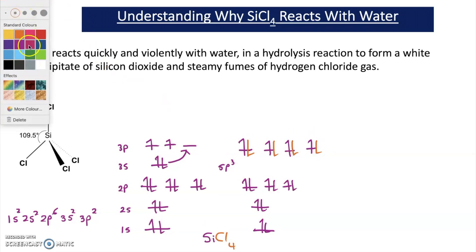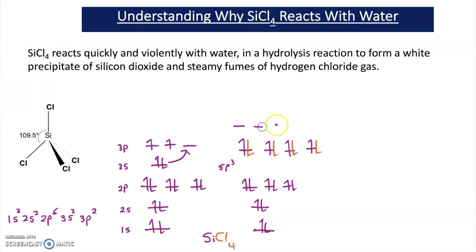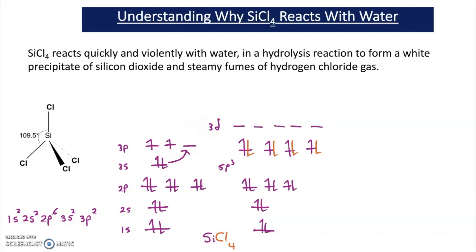The reason that silicon tetrachloride is able to react with water is because there are 5 vacant d-orbitals nearby in terms of energy that water can form bonds to. When we study the mechanism of this reaction, a key intermediate involves water forming coordinate bonds to the vacant d-orbitals on the silicon tetrachloride. Lone pairs of electrons on the water can form dative bonds to these 3d orbitals, and the presence of these d-orbitals is the reason why silicon tetrachloride can react with water.